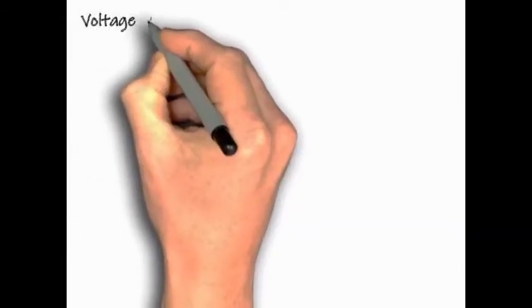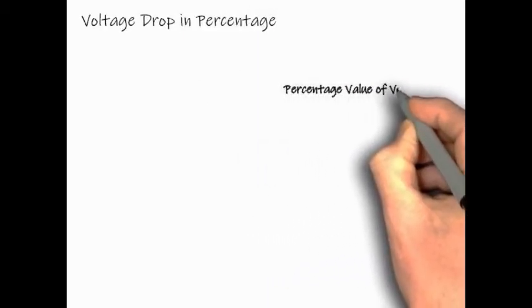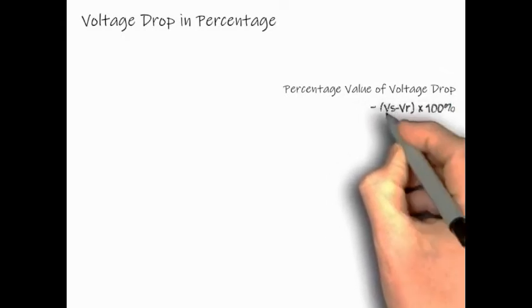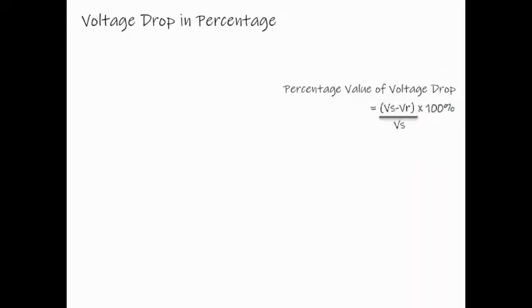Voltage drop can be expressed in percentage. Percentage value of the voltage drop equals to Vs minus Vr divided by Vs multiplied by 100%. The advantage of expressing voltage drop in percentage is that they can be added together directly. Vs is the sending end voltage which can be a nominal value of the supply voltage. Vr equals the voltage receiving end.